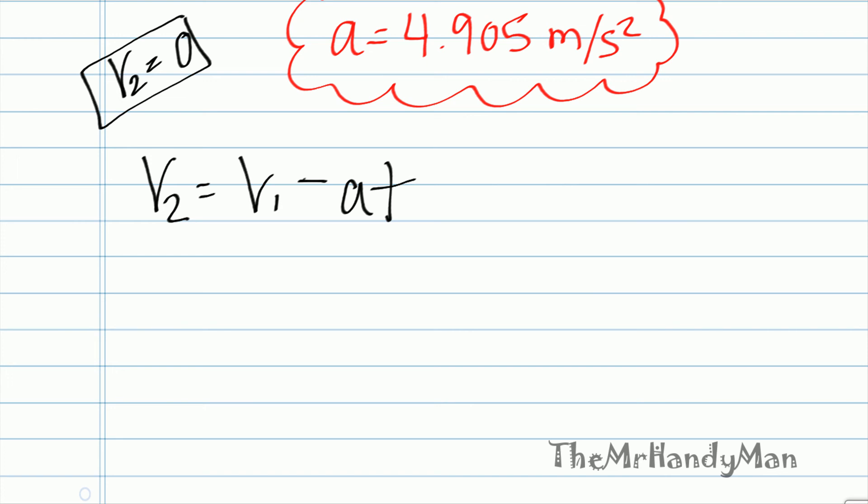When we plug those numbers in, we'll have 0 equals V1 which is 10 minus the whole variable 4.905 times T. And when you solve for all that, you'll find that T is equal to 2.039 seconds.